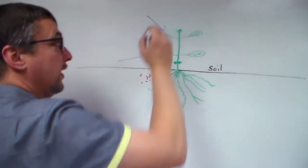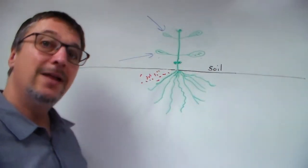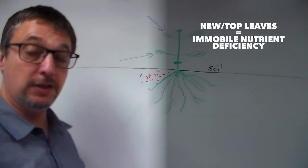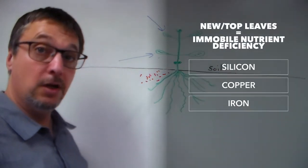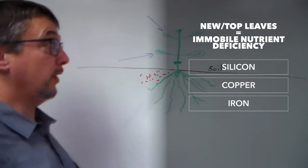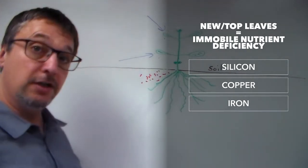If you notice that it's the new leaves that are showing problems, that is an immobile nutrient deficiency. So things like silicon, copper, and iron, these are immobile nutrients, and so that's what you might want to consider if you notice that the newer leaves are showing the problems.